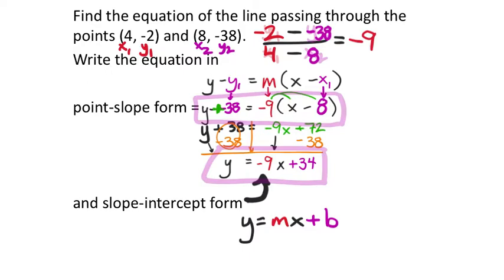I should make this point: if you had used the other ordered pair, you should get this same slope-intercept form. Even the point-slope form will look different — instead of x minus 8, you'd have x minus 4, and instead of negative 38, you'd have negative 2. The main point is we should get the same equation, because the slope is the same for a straight line. And no matter which ordered pair you use, the y-intercept should be the same point on the y-axis.